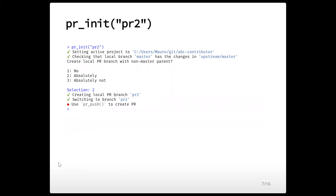Now we are back locally as a contributor. We are in a rush and want to build on top of PR1 and create a PR2 that depends on PR1. It's not a very good idea — something we want to avoid — but sometimes it does happen. usethis knows this is not the best case scenario. When you run pr_init PR2 while standing on PR1, usethis will tell you: create local PR branch with non-master parent. It's telling you that it expects you to usually branch off master, but now we are branching off PR1.